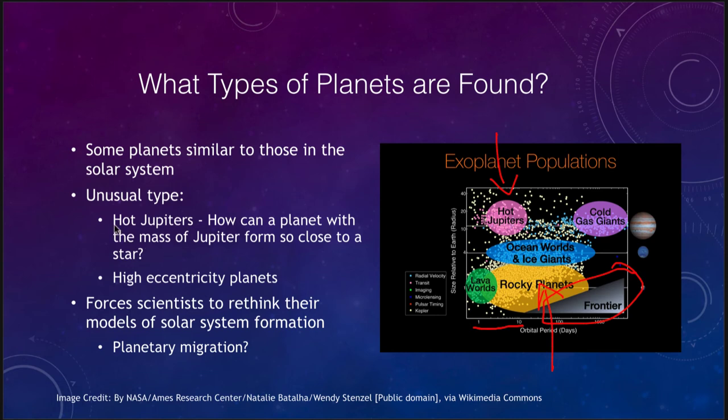So hot Jupiters, how can we get such a planet forming so close to the star? We also see other things like planets like Uranus and Neptune, ocean worlds or the ice giants. We do get the cold gas giants. But those again, when we get out to this edge, we're getting to the frontier of what we are able to detect.